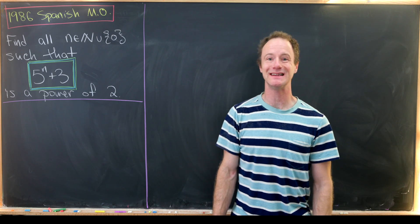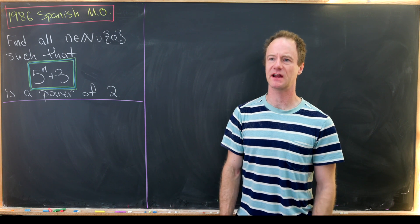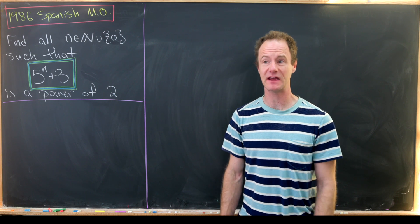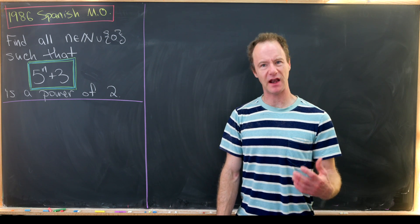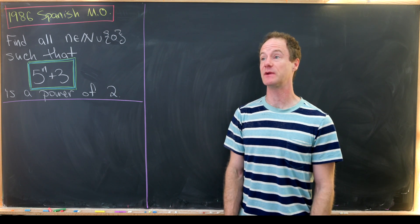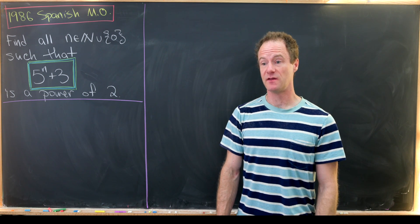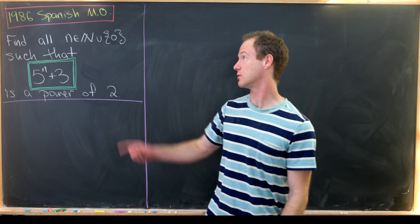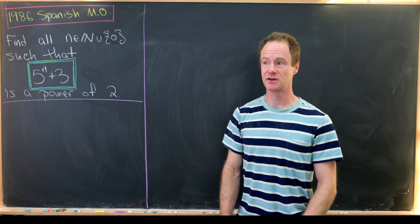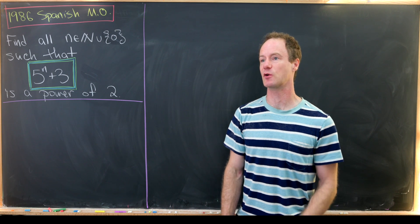Here we're going to look at a nice problem from the 1986 Spanish Math Olympiad. There are a couple of things that I think are interesting about this problem. One is that it uses some fairly advanced ideas from number theory. Another is that it's kind of a grindy problem — you have to do a lot of intermediate calculations to come up with the solution. These two things make me think this is an old style of problem. Notice it's from 1986, which is quite a while ago. Nowadays, problems are not so grindy and don't use advanced techniques like this anymore.